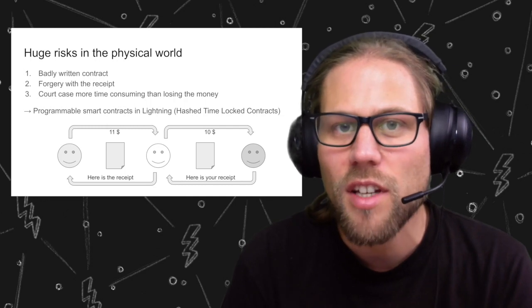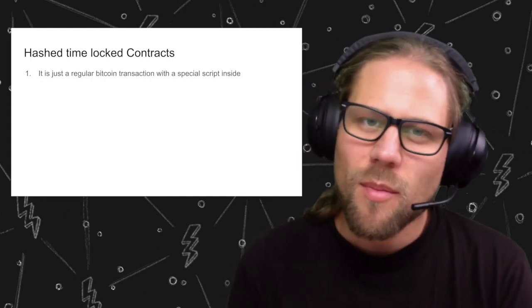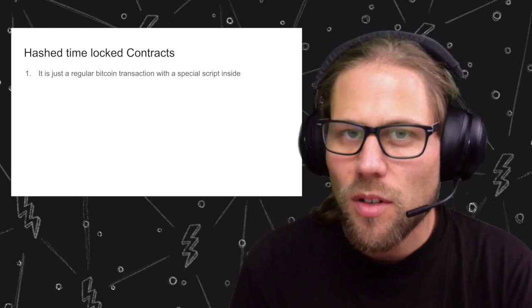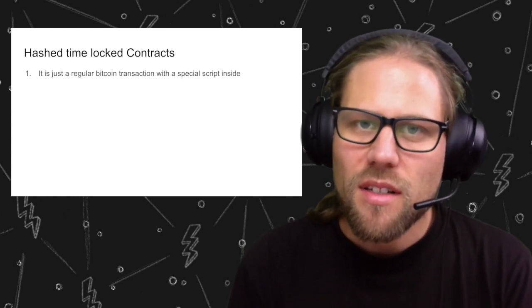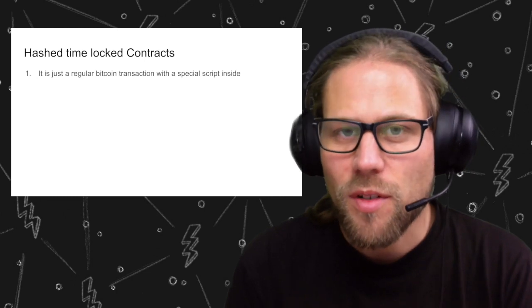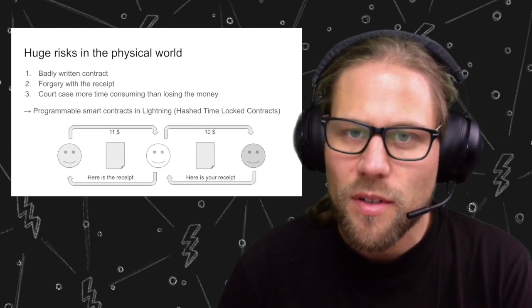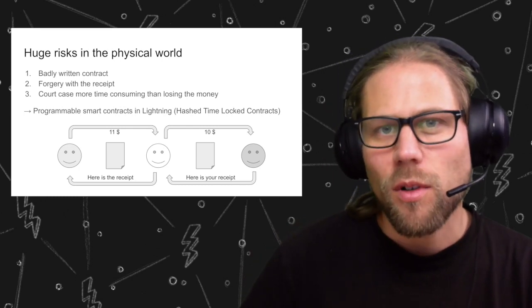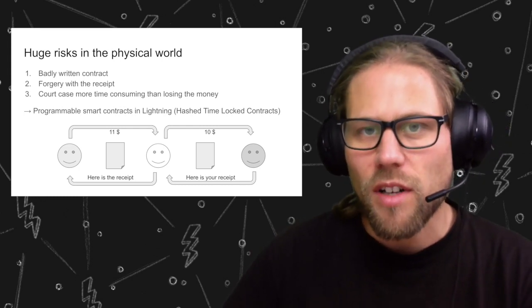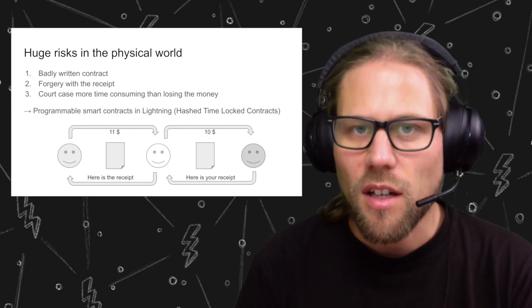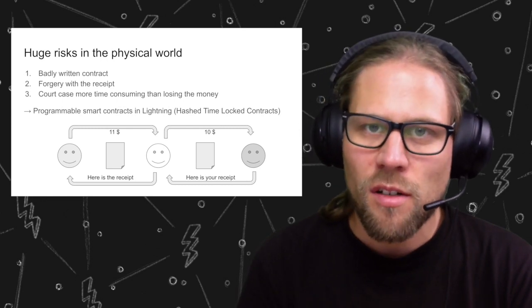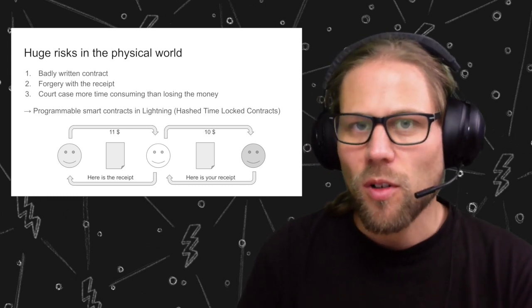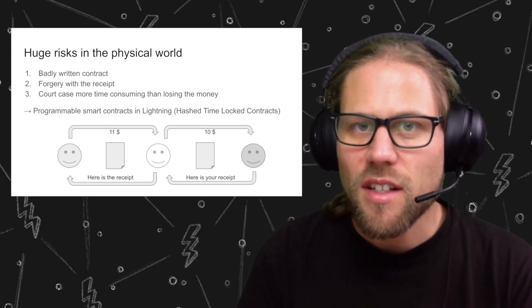The solutions to this are programmable smart contracts in the Lightning Network, and these contracts are called hash time-locked contracts. Looking at the routing picture, that's basically how routing in the Lightning Network works — it's a chain of contracts. In the Lightning Network we don't forward $10 but maybe 10 milli-bitcoins, and we have hash time-locked contracts that are much smarter and much easier to enforce.